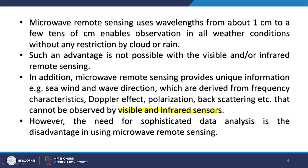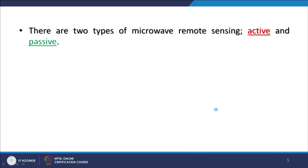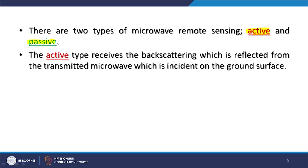The data requires intense processing to produce images. Overall remote sensing — and specifically microwave remote sensing — can be divided into two categories: active and passive. The active type receives the backscattering, because the satellite or sensor itself sends energy or signal pulses towards the ground, and whatever is reflected back after attenuation is received by the same sensor. This is basically the transmitted microwave which is incident on the ground surface.